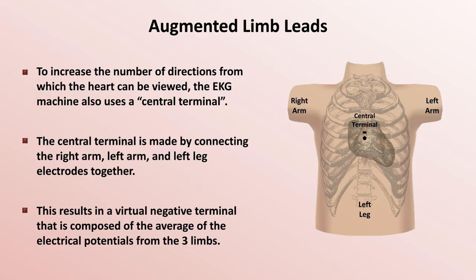The creation of the central terminal allows the recording of 3 new limb leads, one for each of the right arm, left arm, and left leg, with the F of AVF standing for foot.